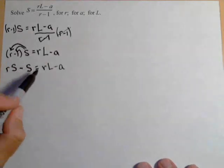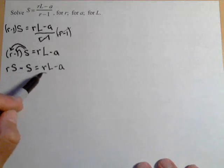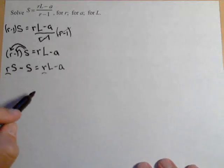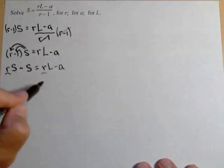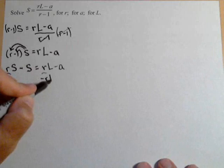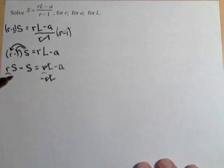Now, remember what we're trying to solve for. We're trying to solve for R. We have two of them in there. We need to get every term with R on the same side. So let's just bring them over to the left-hand side. So I'm gonna subtract RL from both sides.